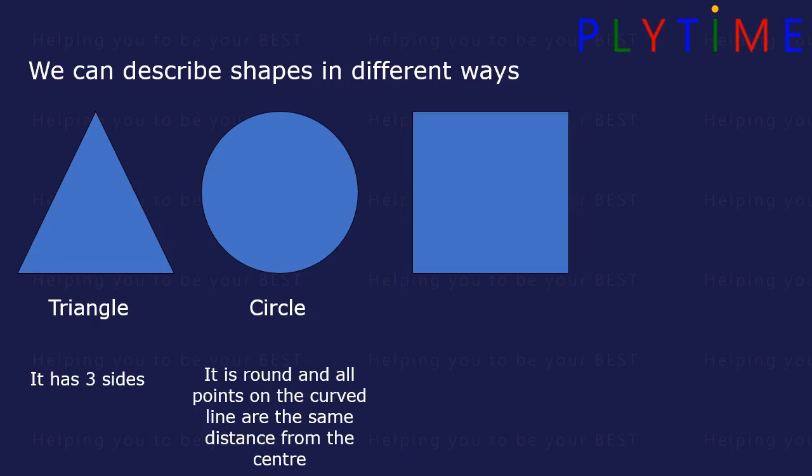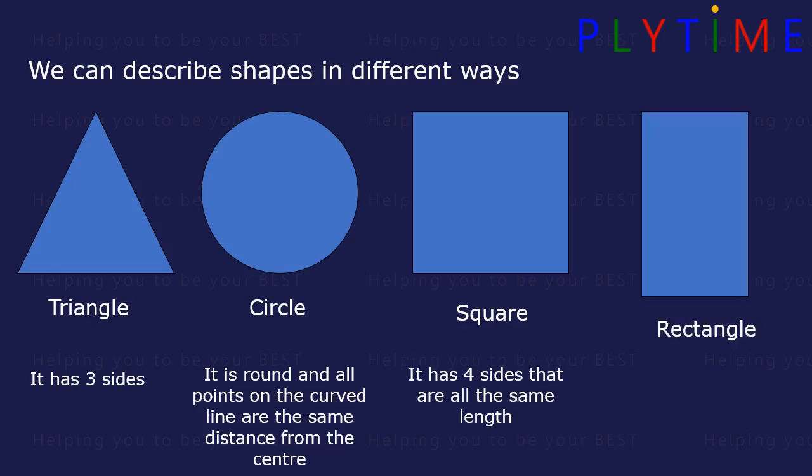A square. It has four sides that are all the same length. And a rectangle. It has four sides and two sides are different lengths.